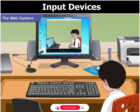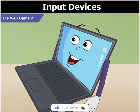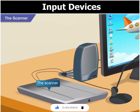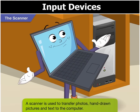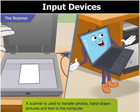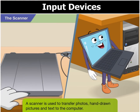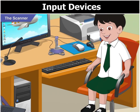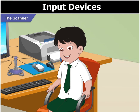Okay Toggle, don't we look smart? What is that device called, Toggle? That is a scanner. It is a very useful input device. And what does it do? It allows us to transfer photos, hand-drawn pictures and text to the computer. Wow, that's a really useful device.